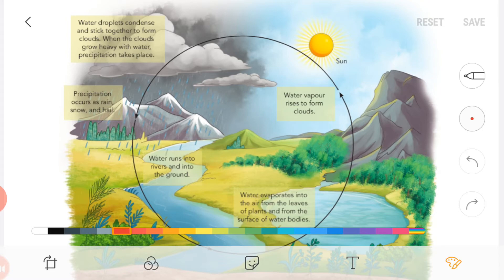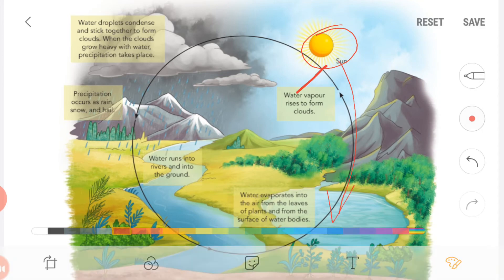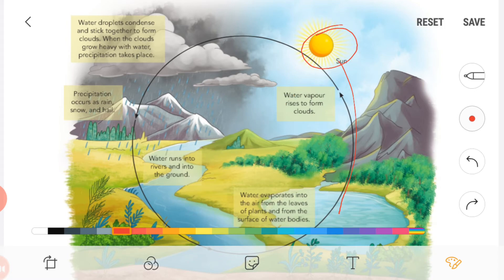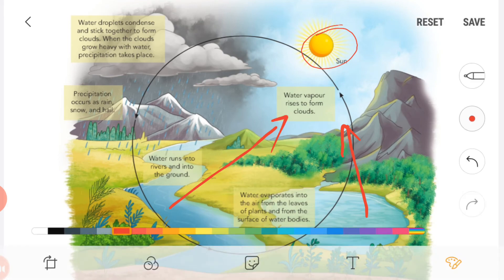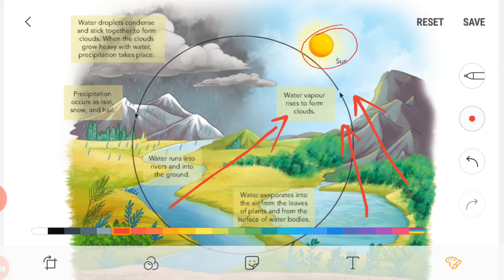Due to sunlight, as temperature increases on the surface of water bodies, the water converts into water vapor — it evaporates from rivers, lakes, ponds. Through the loss of water through stomata in plants, evaporation also occurs from plants. Water from wet clothes also dries up. By this way, all the water is transferred into the atmosphere.